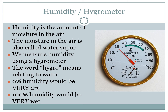The next tool we're going to talk about is a hygrometer. We use a hygrometer to measure humidity. The word hygro actually means related to water. When we're measuring humidity, what we're really measuring is the amount of moisture in the air, also called water vapor. As water turns from a liquid to a gas, it goes into the air and becomes humidity or water vapor.